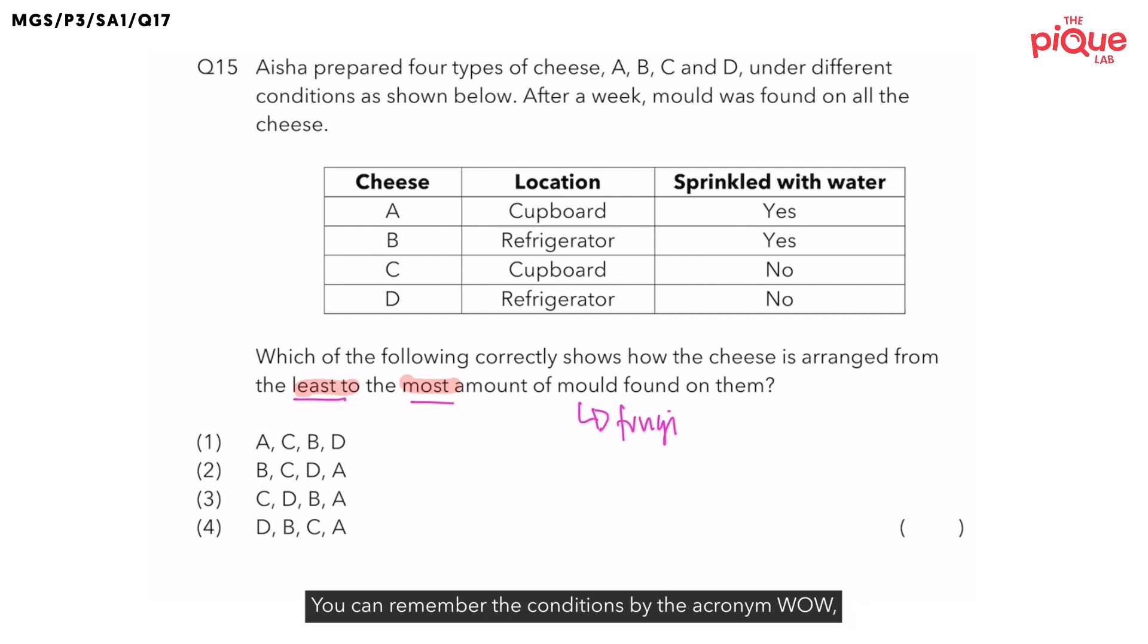You can remember the conditions by the acronym W-O-W or in short WOW. So what does the first W stand for? The first W stands for water. O stands for oxygen. And last but not least, the last W stands for warm. So next time if you ever encounter a mold question, just remember WOW.